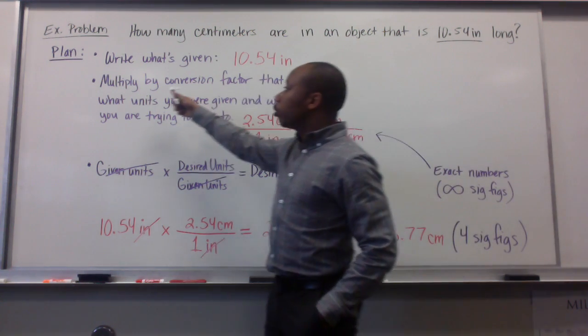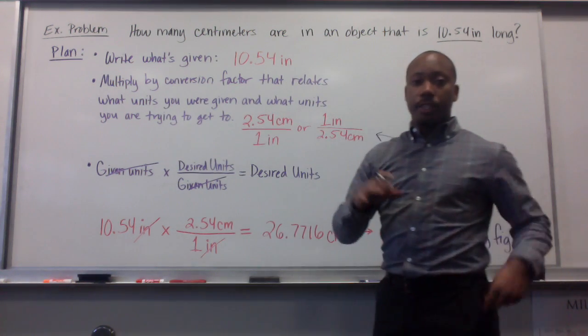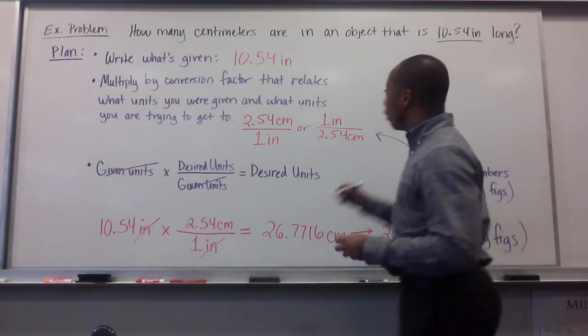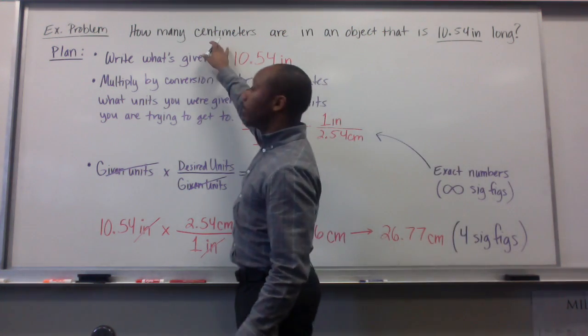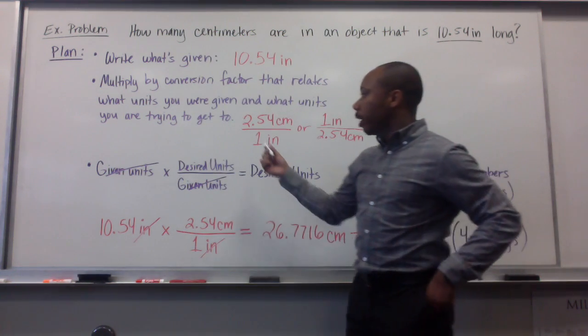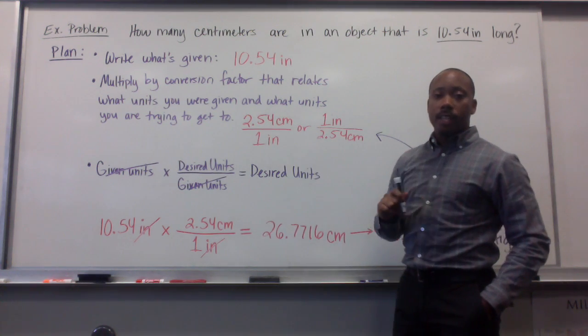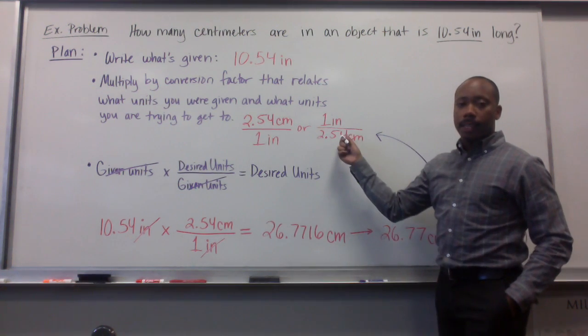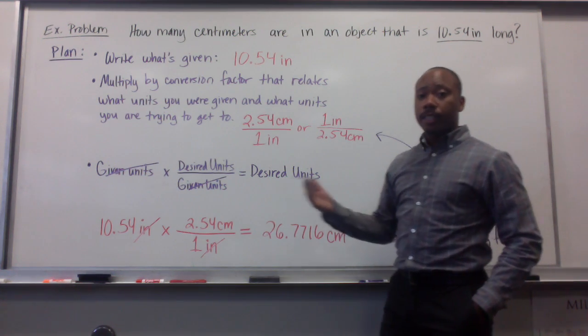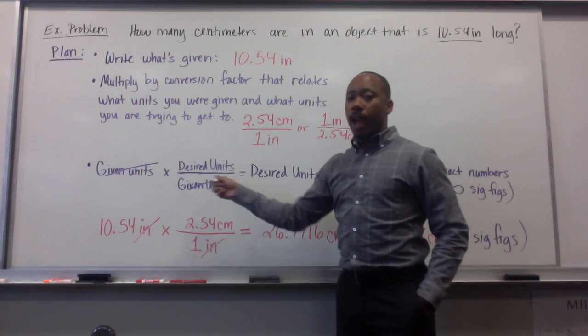The second thing we do is multiply by a conversion factor that relates what units you're given and what units you are trying to get to. So we're given units of inches. We're trying to get to units of centimeters. We saw on the last board that there is a conversion factor that relates to those two. It's 2.54 centimeters per one inch, or you can also write it in this way.